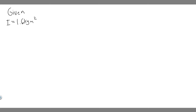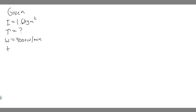Let's write down what we're given. We have the moment of inertia of 1.6 kg·m², and we're solving for torque — that's our unknown. We're given an angular speed omega of 400 revolutions per minute, a time of 8 seconds, and since it starts from rest, omega₀ equals 0 radians per second.